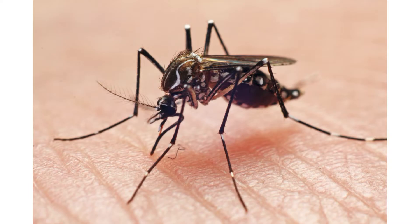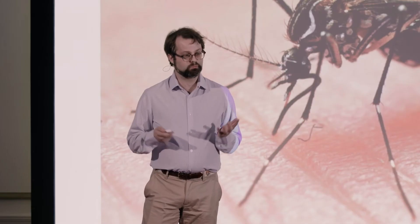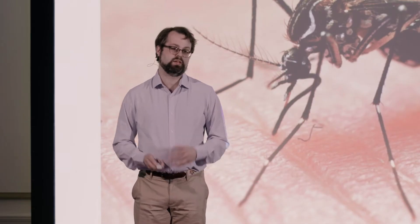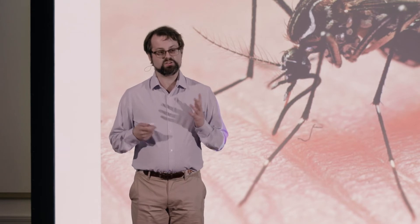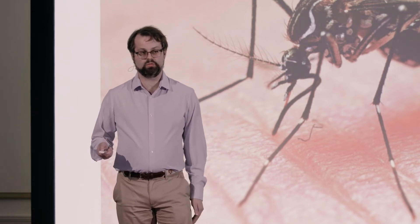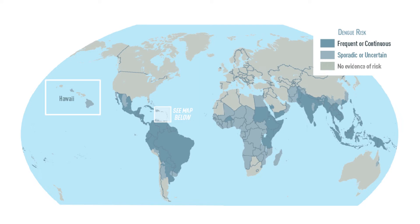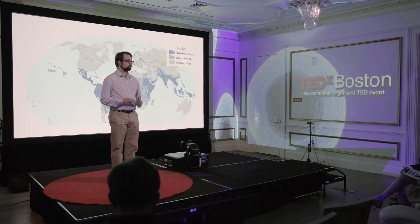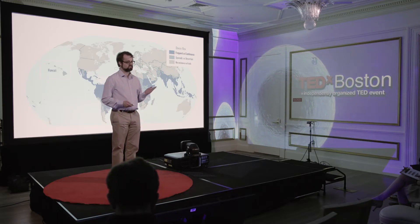I also want to talk about another mosquito-borne virus: dengue. Dengue is a really brutal infection — it has no known cure and affects many, many people around the world. I'm showing you on this map the countries where dengue is found. It affects over a billion people.